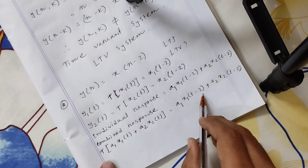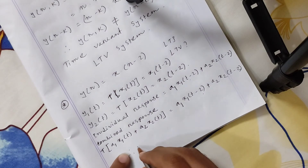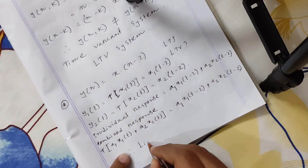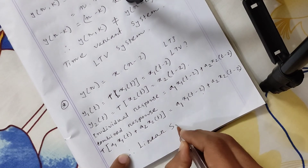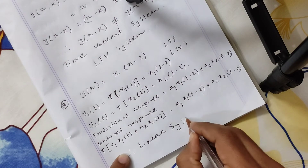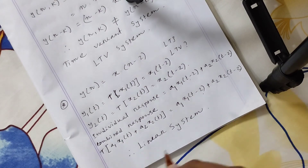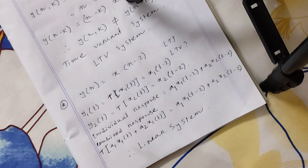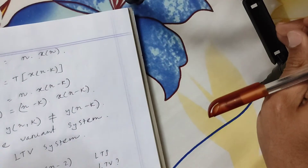We can say that this is a linear system. Now we check whether it is time variant or time invariant.